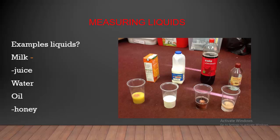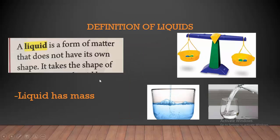What's a liquid? Here we have some examples of liquids — like juice, like milk, like Pepsi, like water, like honey, like oil, and so many more. And this is the definition of liquid: liquid is a form of matter that does not have its own shape.